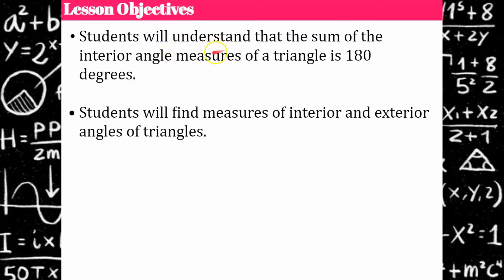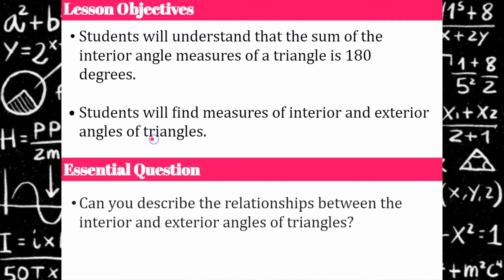Today, I hope that you will understand that the sum of the interior angle measures of a triangle is 180 degrees, and that you can find the measures of interior and exterior angles of triangles. So what I want you thinking about today as we go through this is, how could you describe the relationships between interior and exterior angles of a triangle? So I'm going to prove a couple of theorems to you today, and I hope that this will help you be able to discern between interior and exterior angles and how to find their measures.